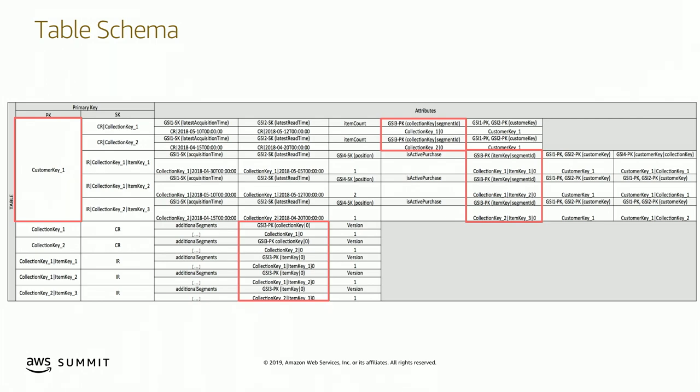If maybe a hundred thousand customers own a single collection, that's not too many. But if a million own the same collection, maybe that is. We look at the size of the item, the nature of the query — does it want to return all data as fast as possible, or is pagination okay? Can we rate-limit the data? Understanding velocity, shape, and frequency of access patterns is extremely important. Right sharding is also covered in the DynamoDB best practices documentation.